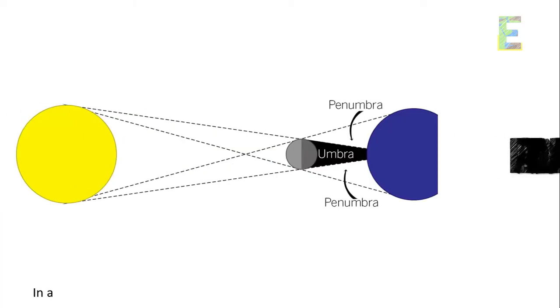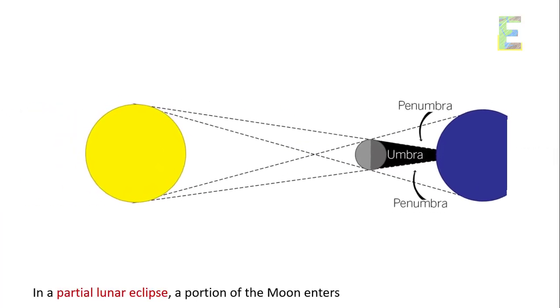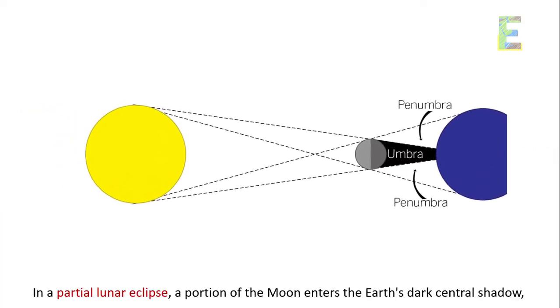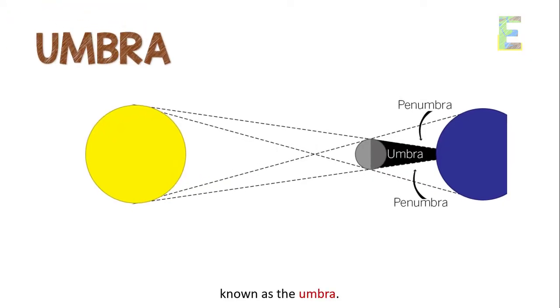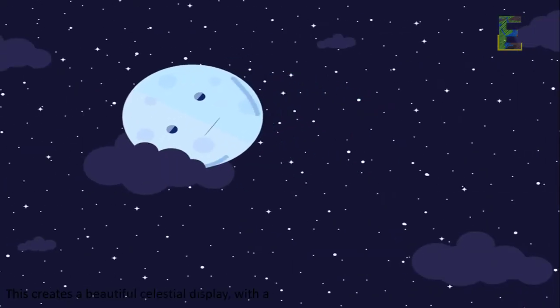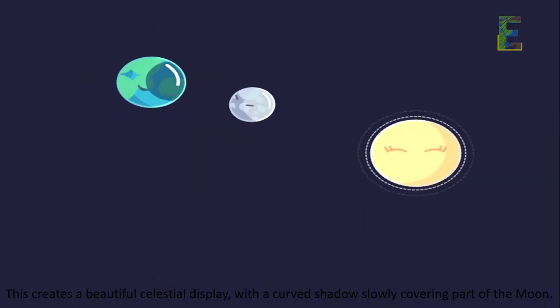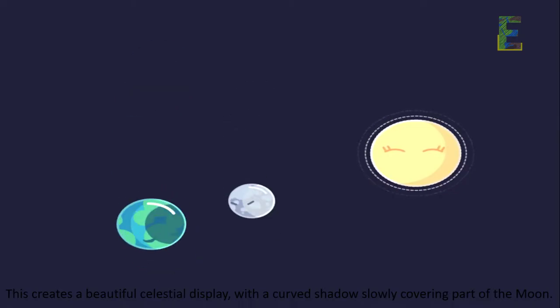Partial Lunar Eclipse. In a partial lunar eclipse, a portion of the Moon enters the Earth's dark central shadow, known as the Umbra. This creates a beautiful celestial display, with a curved shadow slowly covering part of the Moon.